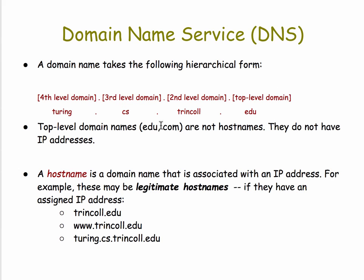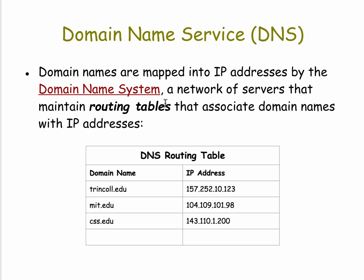Top-level domain names like edu do not have IP addresses — they're not connected to any particular computer. You need at least two levels to find an actual computer on the internet. A host name is the domain name associated with an IP address, and it's legitimate if it has an assigned IP address. The domain name service is responsible for mapping domain names to IP addresses using a collection of servers organized into a hierarchy that perform the translation using routing tables — a lookup table where you find the domain name and its corresponding IP address.